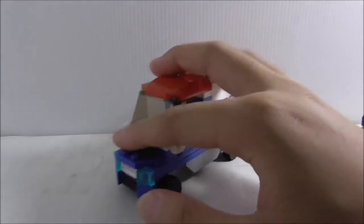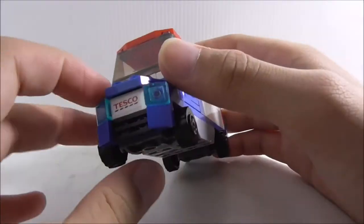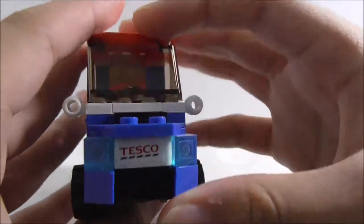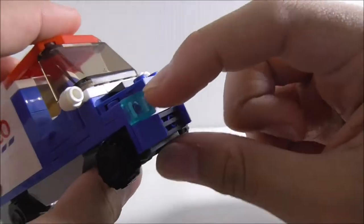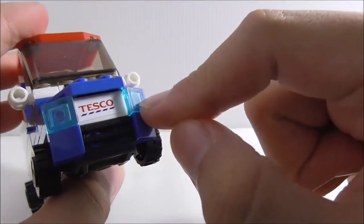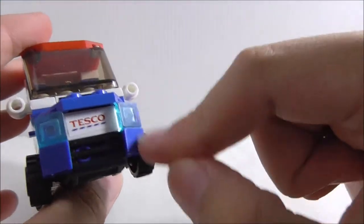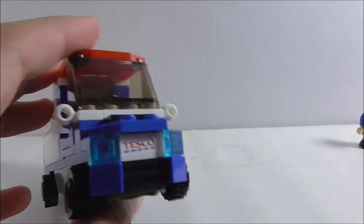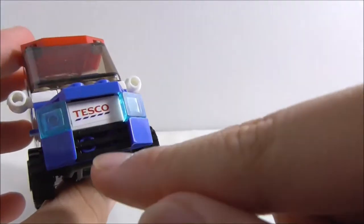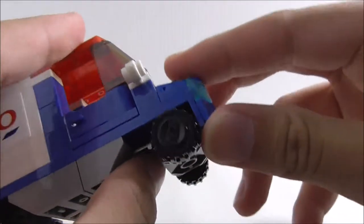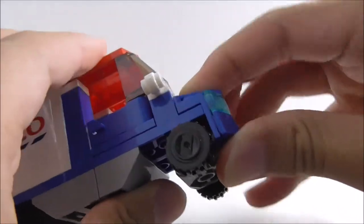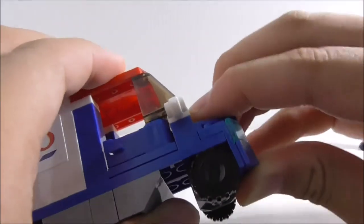So this is the Tesco truck right here. Let's start with the front. At the front, you have the headlights and they're in this blue color. It does look great, but it's kind of a bit weird for this kind of car. You have the Tesco logo at the front and you got this grill right here. This is kind of a terrible design because this thing is easily removable. You can just pull this thing up very easily.